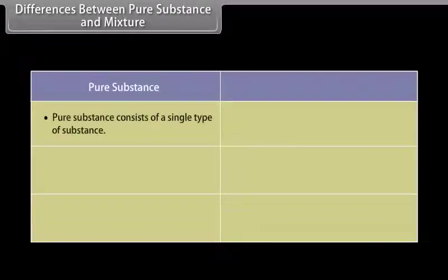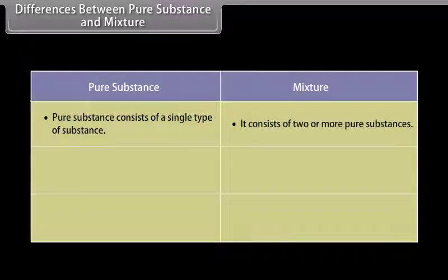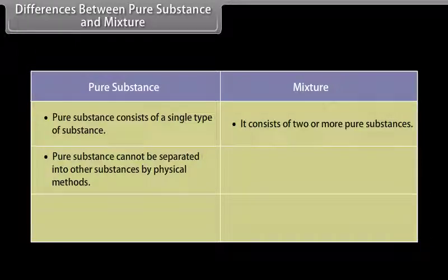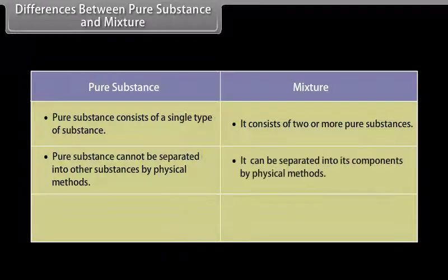Differences between pure substances and mixtures: A pure substance consists of a single type of substance, whereas mixtures consist of two or more pure substances. Pure substances cannot be separated into other substances by physical methods, but mixtures can be separated into their components by physical methods.